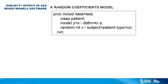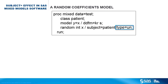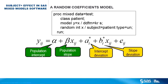A random intercept and slope model adds the covariate X to the random statement. The subject effect is unchanged. The type equals UN option specifies an unstructured variance-covariance matrix. The statistical model specified by this program is defined in this equation.